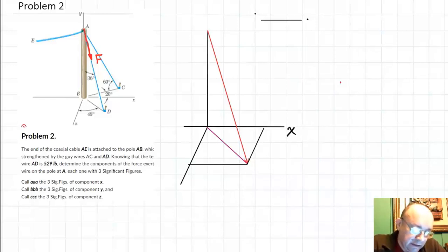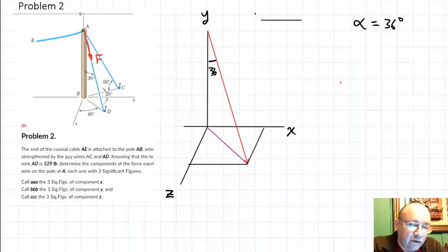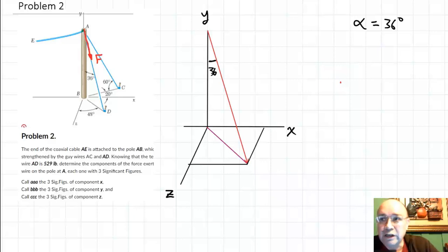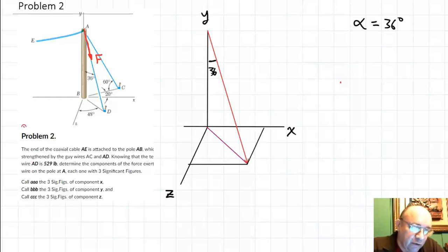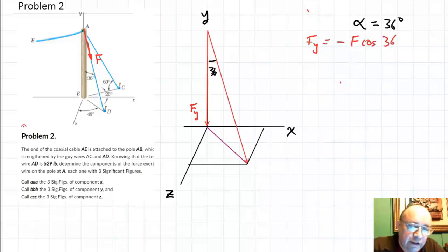When working with forces in 3D, the ideal situation is having the angles the force makes with each axis — but that's not always the case. Here we have the x-axis, z-axis, and y-axis. We have angle alpha of 36 degrees, which is directly the angle that the force makes with the y-axis (the vertical axis). So we can directly calculate the y-component: Fy equals minus F cosine 36 degrees.